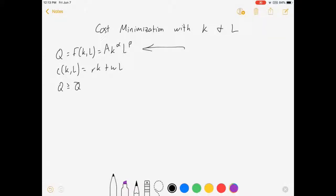So here's what we got. Cobb-Douglas production. Our cost function is just R times K plus W times L. That's rental rate on capital and wage for labor.